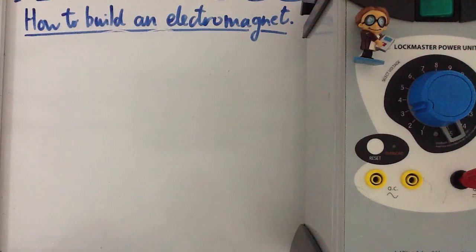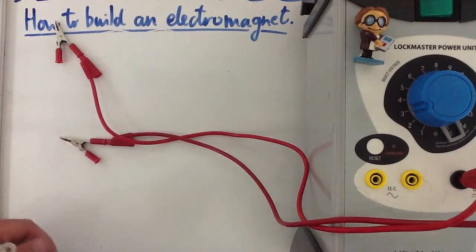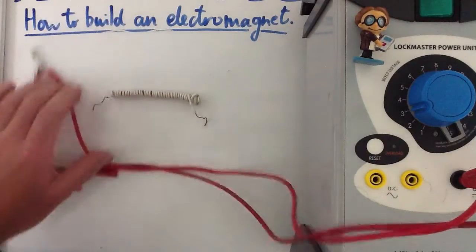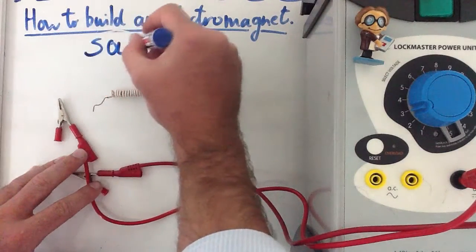Building an electromagnet is really easy and can be done from the safety and comfort of your own home. What you will need is a source of electricity. I'm using a power pack in this case, and you will need a coil of insulated wire. This is known as the solenoid.